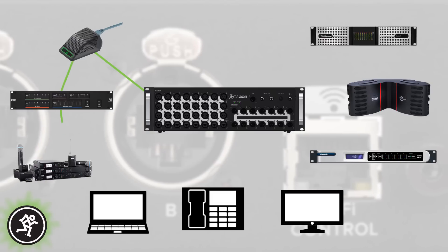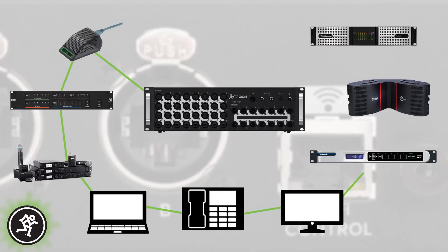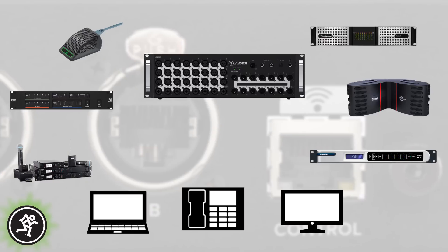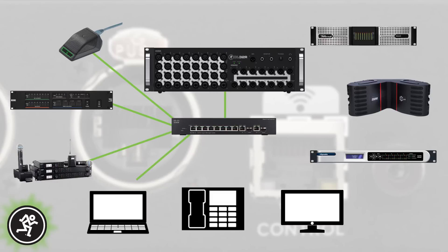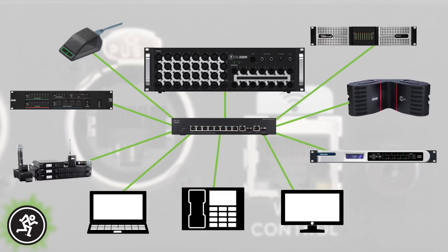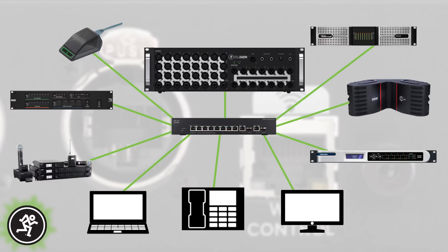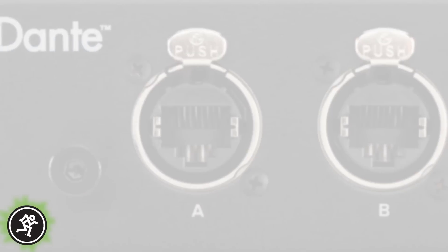In smaller applications, simply daisy chain the devices together. For larger systems, just grab a readily available off-the-shelf Ethernet switch. Compare that to other digital audio networks that require proprietary, hard-to-find, expensive hardware and discrete network cable runs. With Dante, you can often utilize pre-existing data networks and components for your Dante network, which is incredibly useful for installs in larger applications such as schools, corporate offices, and houses of worship.